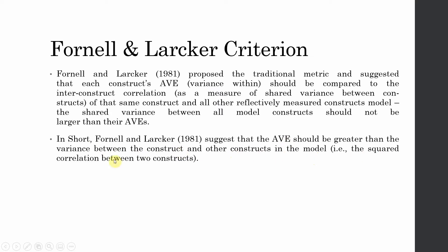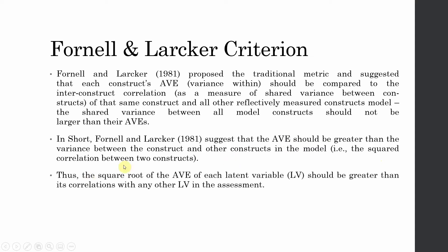In short, Fornell and Larcker suggest that AVE should be greater than the variance between the construct and other constructs in the model — that is, the squared correlation between the constructs. Otherwise, the square root of AVE shall be greater than its correlation with all other constructs in the study. Thus, the square root of the AVE of each latent variable should be greater than its correlation with any other latent variable in the model.